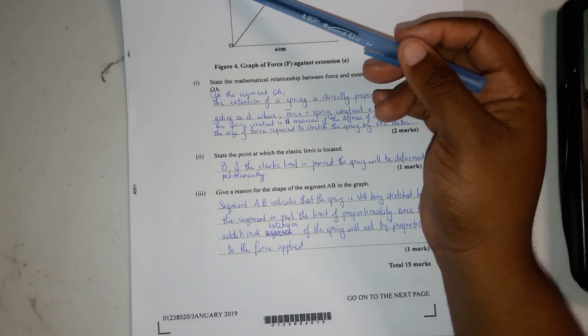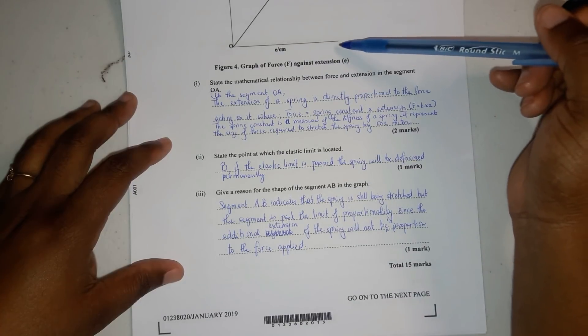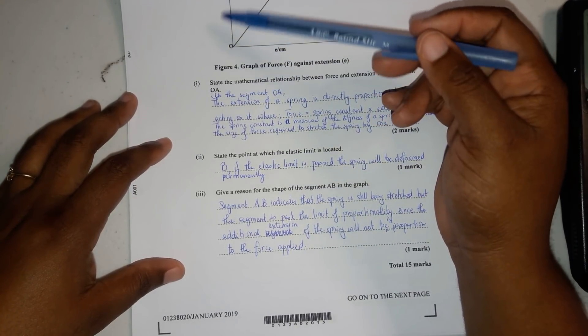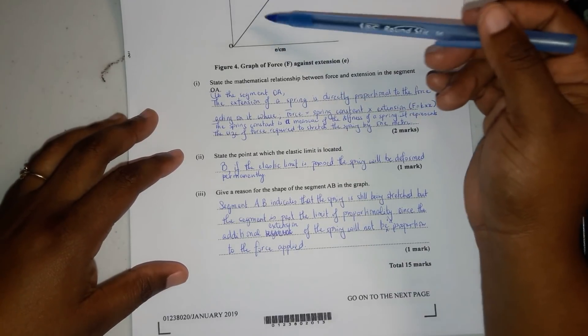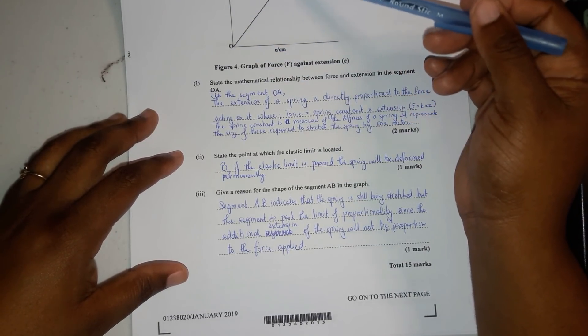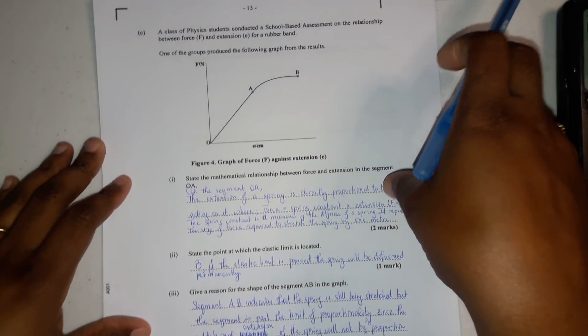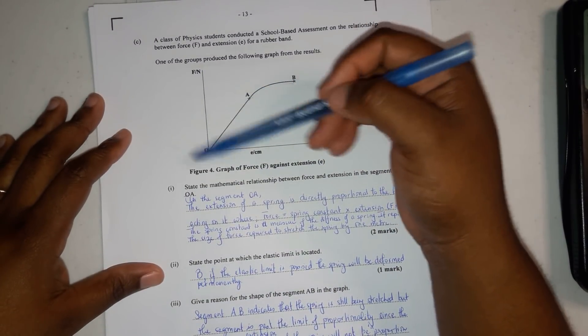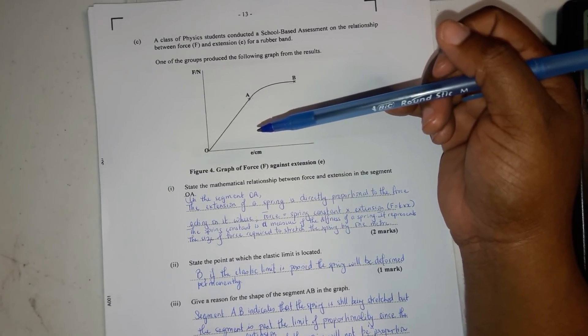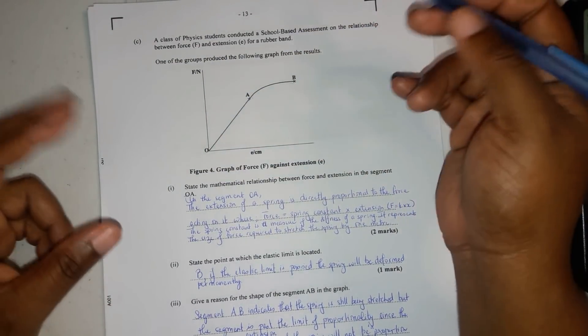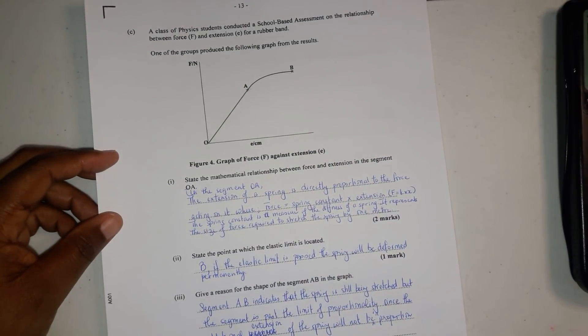Usually in labs, you would have done extension versus load, which is the force. You would have put the extension here and gotten a graph that curves upwards. It's the same thing, it just depends on what you're controlling and what you're judging. Whatever you judge is usually on the y-axis, and whatever you control is on the x-axis. In this case, they have load against extension, which is okay. You could do extension against load depending on what your lab is judging and controlling.